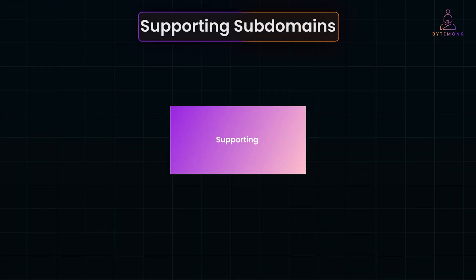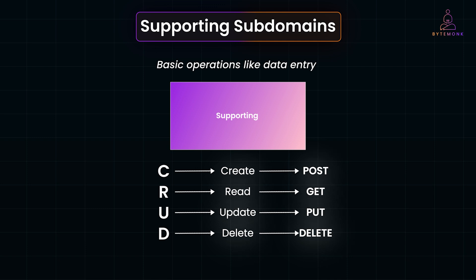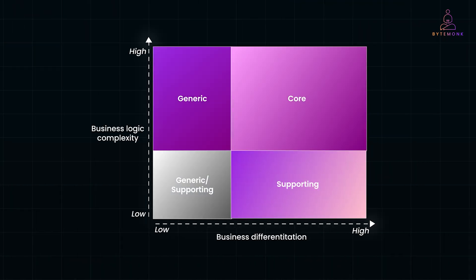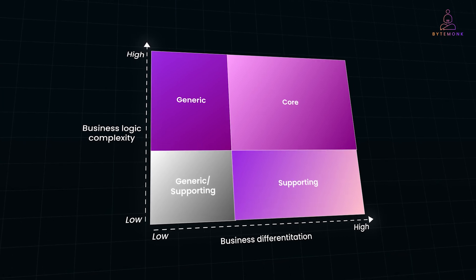Supporting subdomains are essential for the business but don't directly drive competitive advantage. They are typically simple, involving basic operations like data entry or CRUD tasks. These areas don't require high entry barriers and serve as tools to enable core activities. This chart illustrates how the three subdomain types relate to business differentiation and complexity. The overlap between supporting and generic subdomains is a grey area — it depends on whether integrating an existing solution is simpler or more cost-effective than building from scratch.